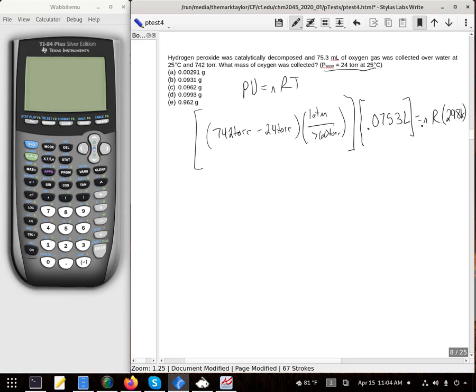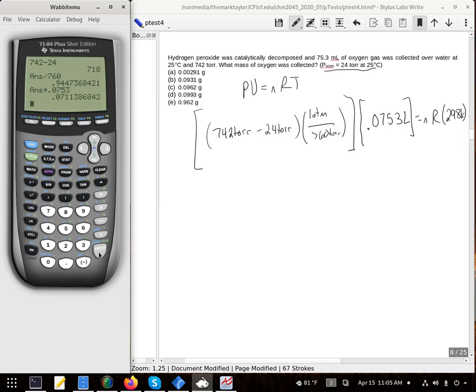So let's first solve for just our n. So 742 minus 24, and divide that by 760. That will be the pressure of our oxygen in atmospheres. We're going to multiply that by the 0.0753. Then we will divide by our R value and by the temperature.